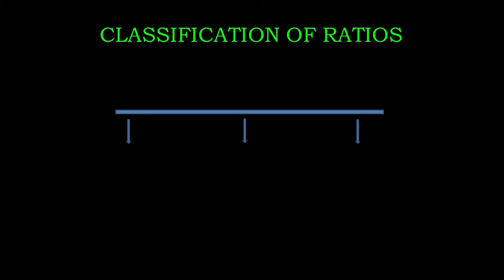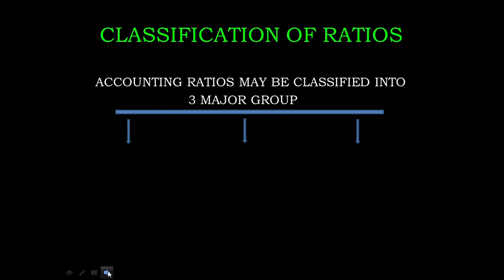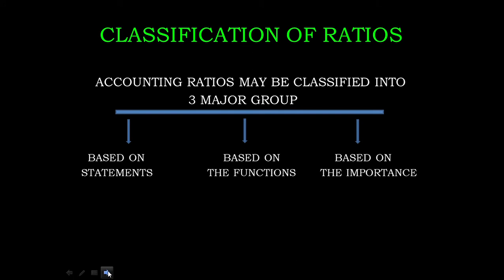In the previous class, we are going to talk about Classification of Ratios. Ratios can be classified into 3 major groups. There are 3 types of classification.